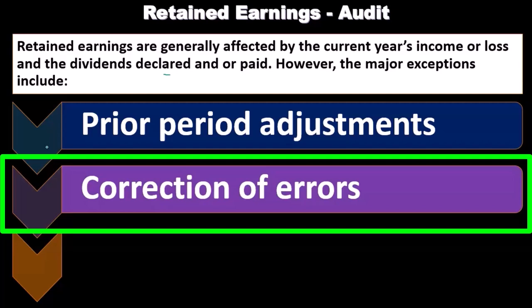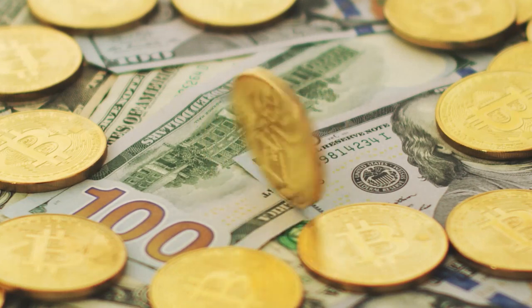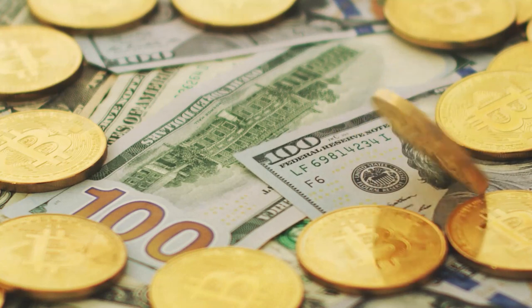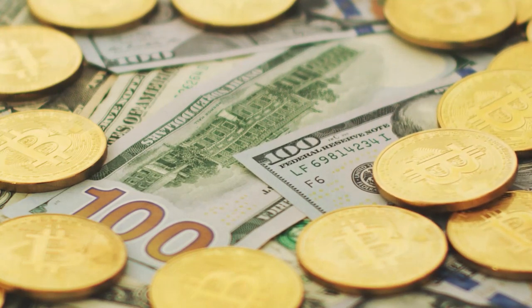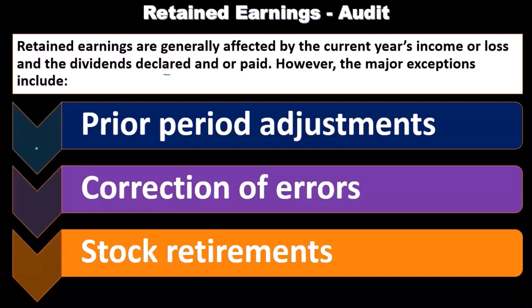A correction of an error is another thing that could happen. If an error is corrected and the period was already closed out, the adjustment might go to retained earnings depending on how we correct that error. For example, if a check was canceled in a prior period going to an expense account and we said that was an error, and that expense account had already rolled over to retained earnings, it could affect the retained earnings account.